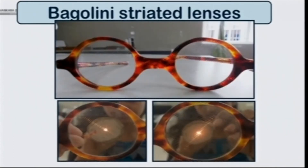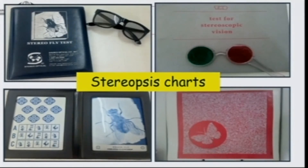The next important sensory evaluation tool is the Bagolini striated lenses. These lenses have striations so that when the patient looks through them at a point light source, they see a line across it. This allows you to differentiate between normal retinal correspondence (NRC) and anomalous retinal correspondence (ARC).